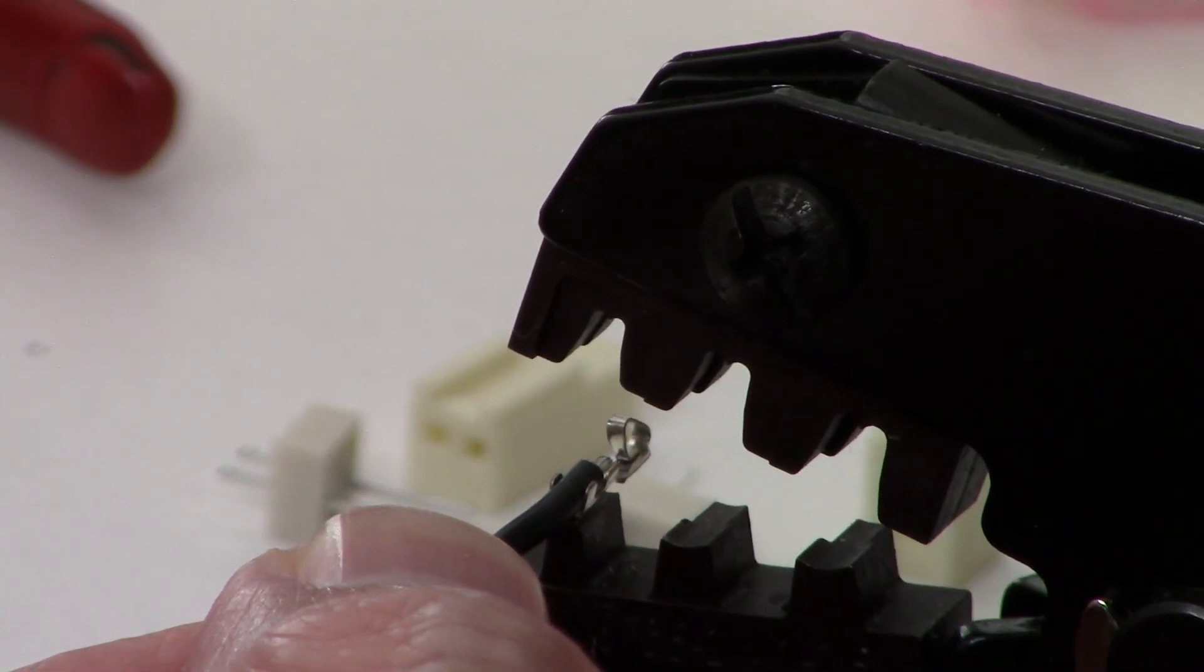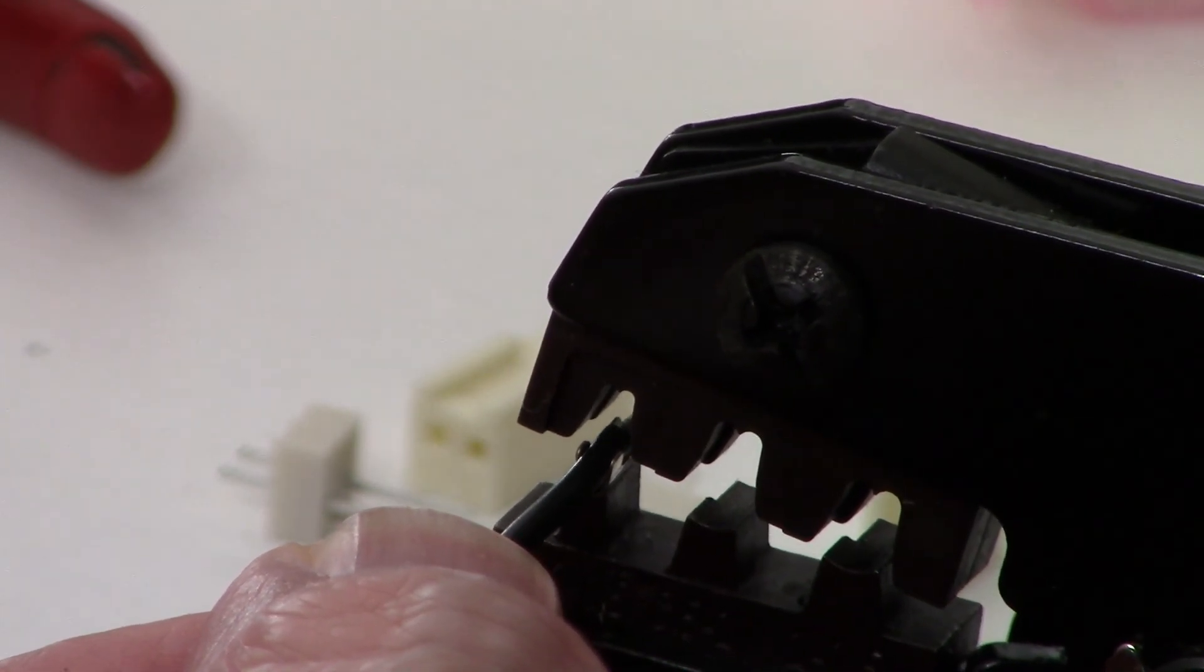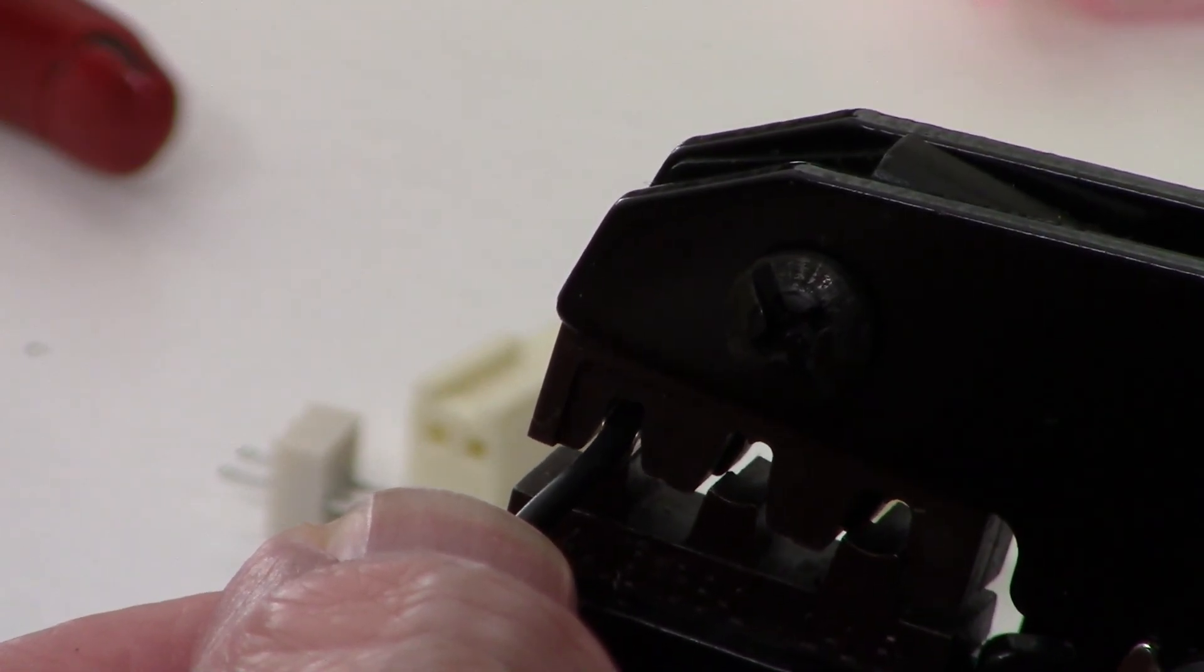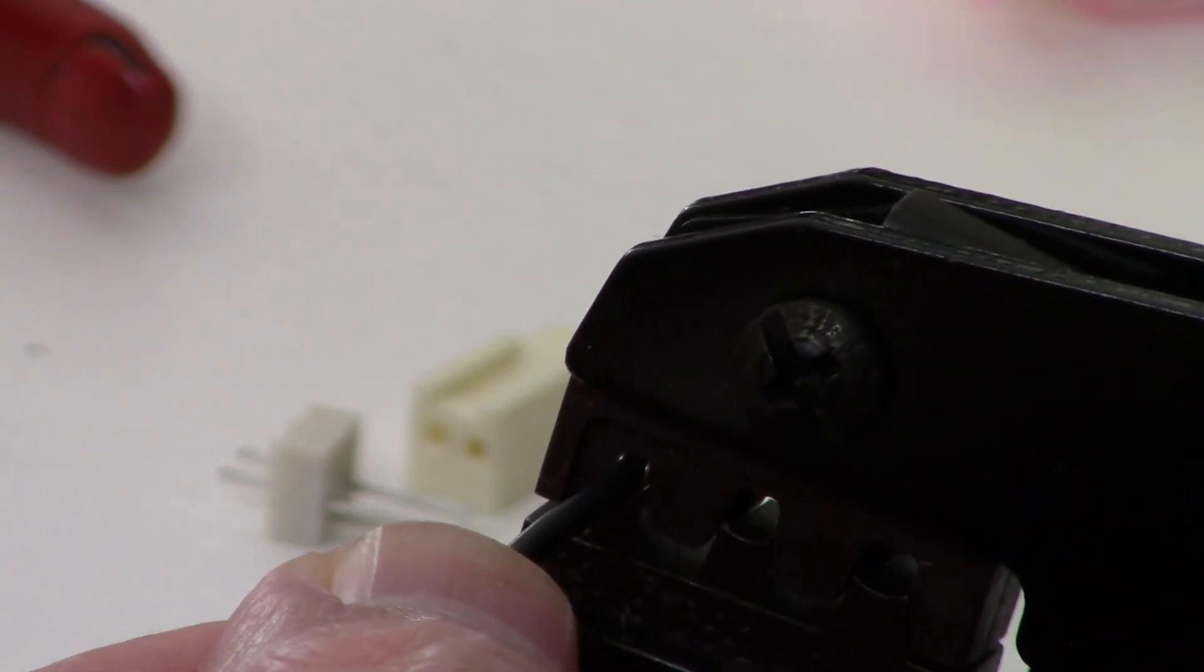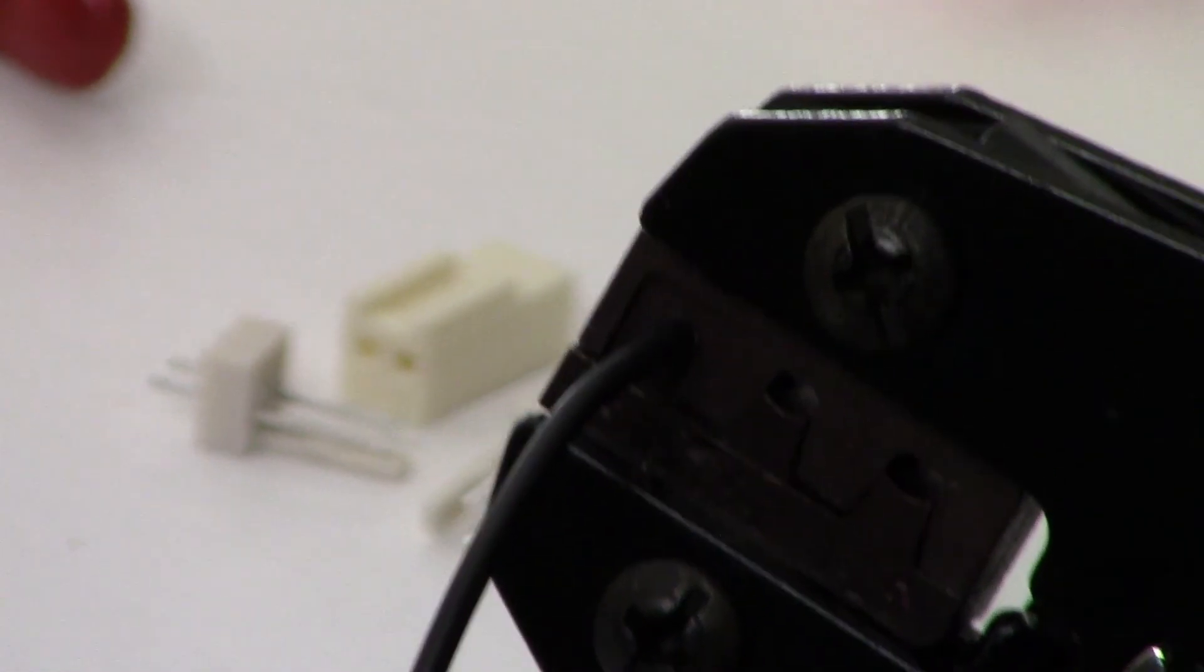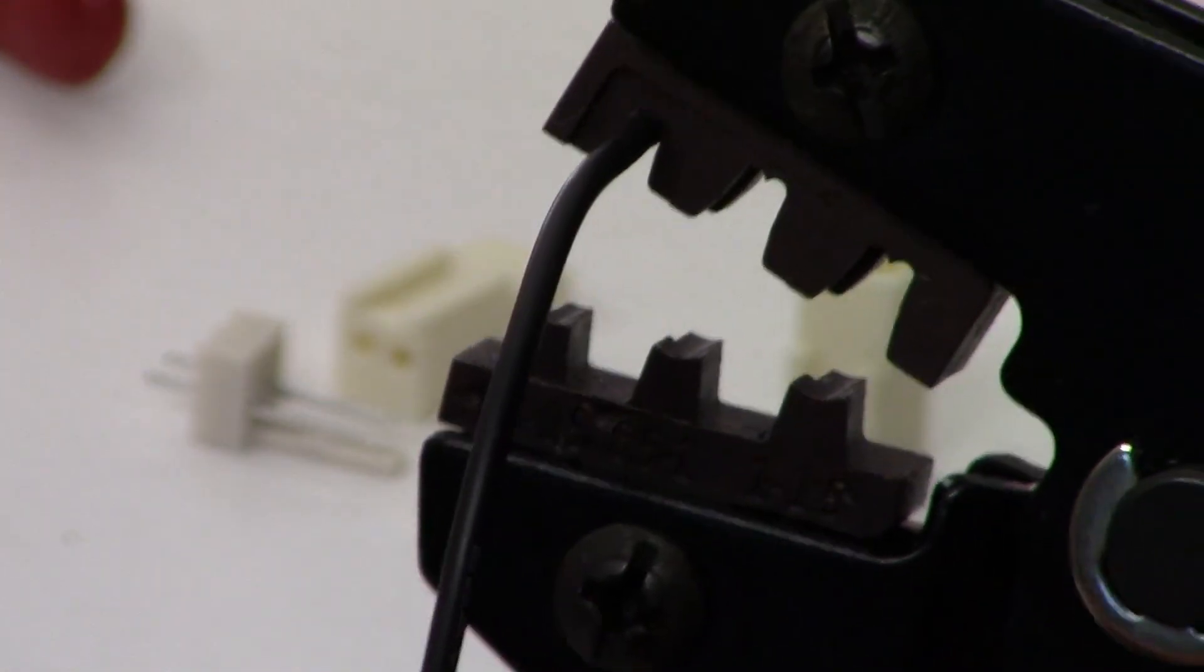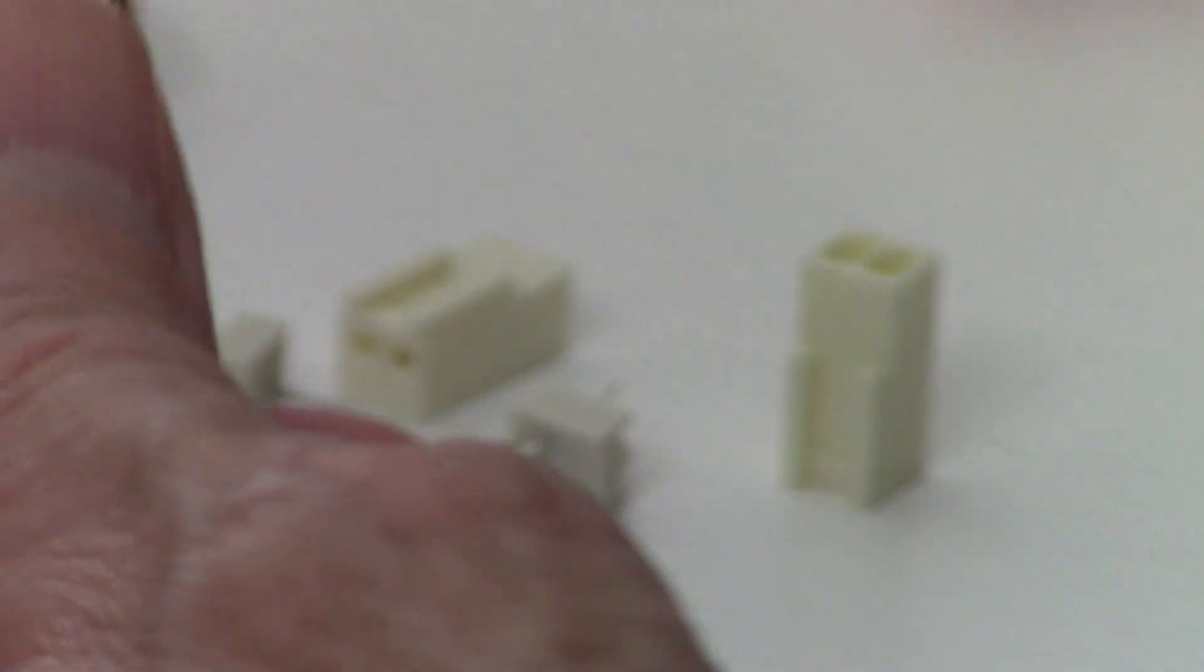I'm going to lay it in like this, just so the fingers are flush with the face of the crimper. And it's a ratcheting crimper and you can see it's crimped but it's still held in there. You can pop it out like that.